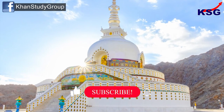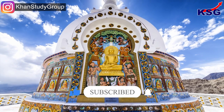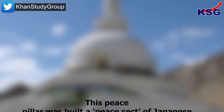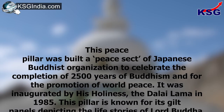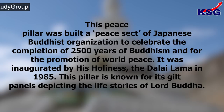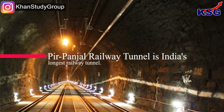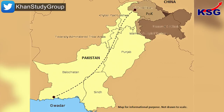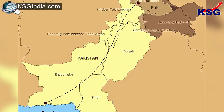Shanti Stupa is a white-coloured dome-shaped structure located in Chandspa which looks extremely beautiful at night when illuminated. This peace pillar was built by a peace sect of a Japanese Buddhist organisation to celebrate the completion of 2,500 years of Buddhism and for the promotion of world peace. It was inaugurated by His Holiness the Dalai Lama in 1985. The pillar is known for its gilt panels depicting the life stories of Lord Buddha. Asia's largest tulip garden is in Srinagar. Pir Panjal Railway Tunnel is India's longest railway tunnel.